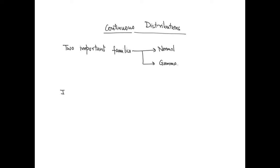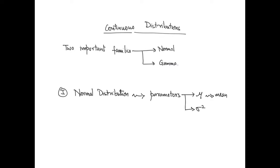The normal distribution is defined by two parameters: mu, which is the mean of the distribution, and sigma squared, which is the variance. If a random variable X follows the normal distribution it will be denoted by the following symbol. Note that if sigma squared is the variance, then the square root, that is sigma, will be the standard deviation.